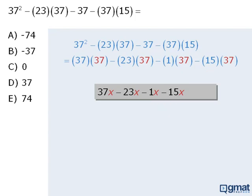To simplify the expression involving the xs, we will begin with 37x and subtract 23x to get 14x. From here when we subtract 1x we get 13x. And finally when we subtract 15x we get negative 2x. So this expression involving xs simplifies to be negative 2x.